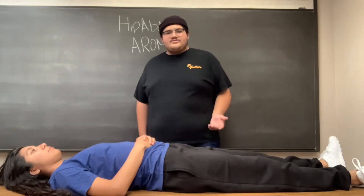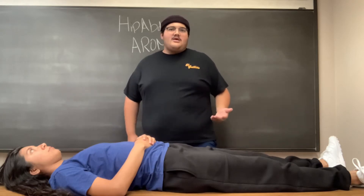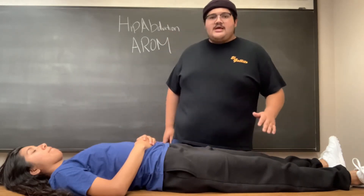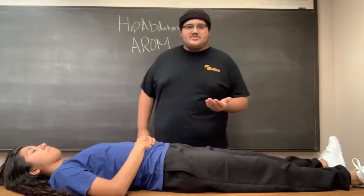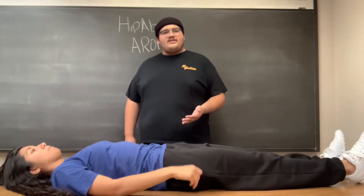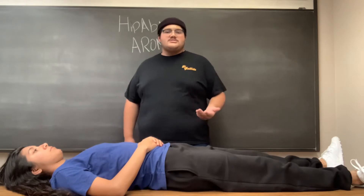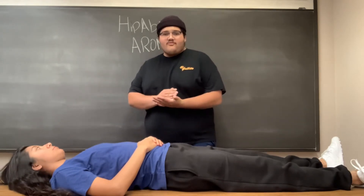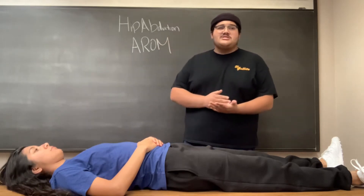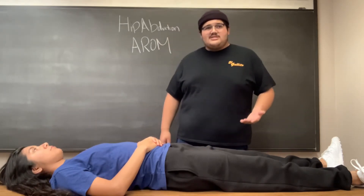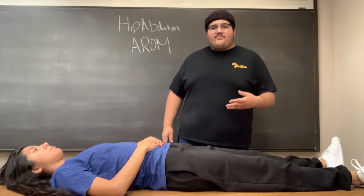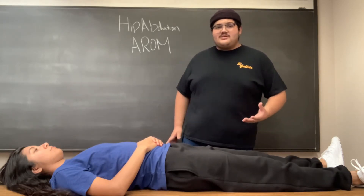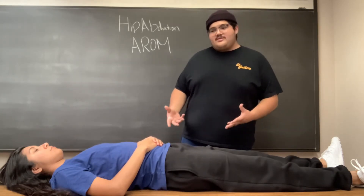We use this to detect any pain or location of pain in the hip joint. The normal values for this are 30 to 50 degrees, and the movement occurs in the frontal plane. When we assess active range of motion, we want to look for any compensation in the lumbar spine or pelvis, which shows that something is going wrong with the patient's hip joint.